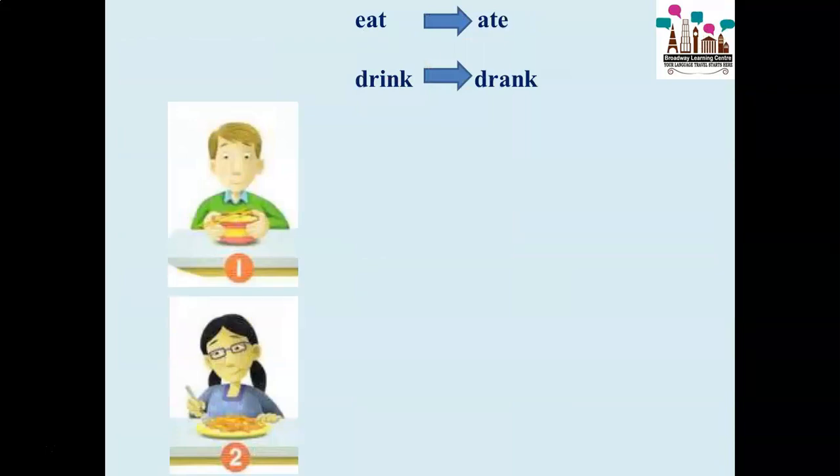For example, eat and drink are verbs that are used in the present tense. If we want to talk about the past, if the action is already done, we need to use the past tense form. Eat is something that's happening now. If we want to refer to something that happened in the past, we need to say ate. So eat, ate. Drink and drank. Let's look at the following sentences.